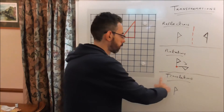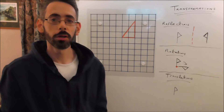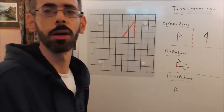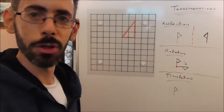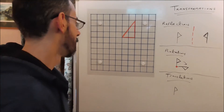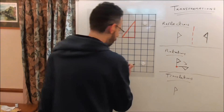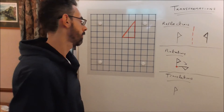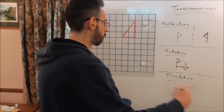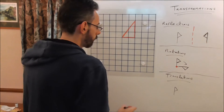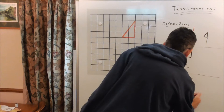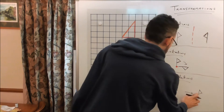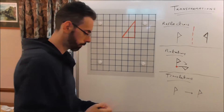We're not doing translations today, but I'll just quickly mention what they are. When you translate a shape, you just move it in a straight line — up, down, left, right. So if this shape was drawn on the grid and we were told to move it five squares to the right, we'd count five squares right and draw exactly the same shape just in a different position, five squares to the right.